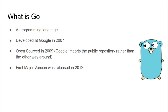So what is Go? Go is a programming language which was developed by Google in 2007. It was open sourced by Google in 2009 and the first major version of Go was released back in 2012. To put things in perspective, Java came into existence in 1994, so it is 18 years older than Go. One more interesting thing to note is that multi-core processors became available in the market from 2006, so Go was developed after the advent of multi-core processors. Later in the video we will see why that matters.